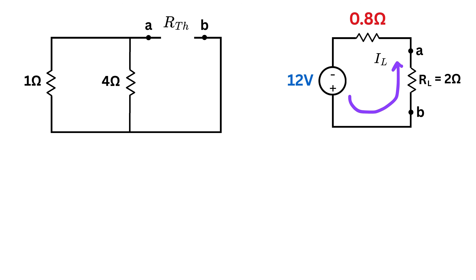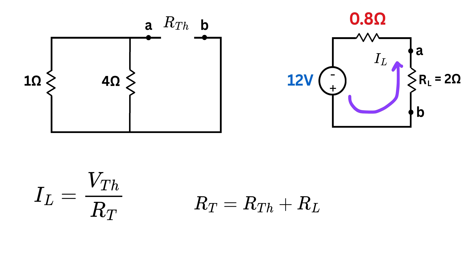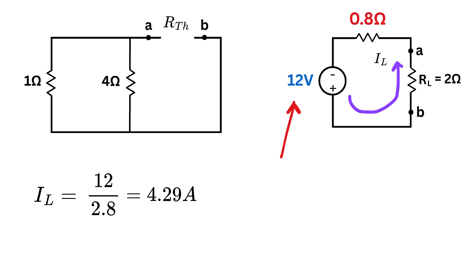If we show the current IL going through the load, then its value will be voltage over total resistance. Thevenin resistance and load resistance are connected in series, and thus total resistance is RTH plus RL, or 2 plus 0.8 or 2.8 ohms, and voltage is 12 volts. So IL equals 12 over 2.8 or 4.29 amperes. This is how we solve a circuit using Thevenin's theorem.